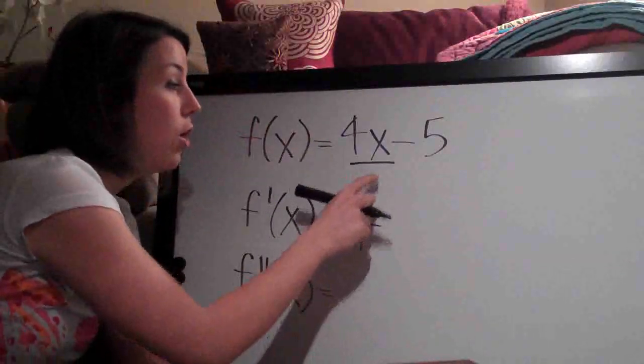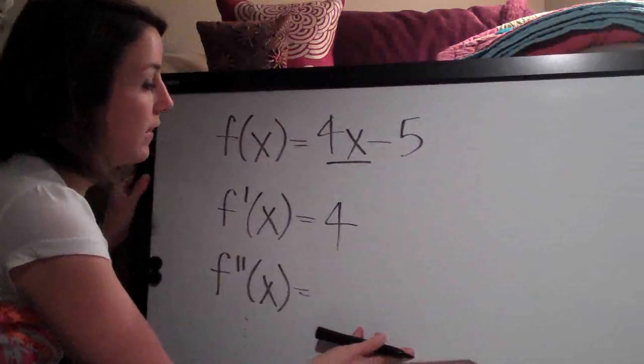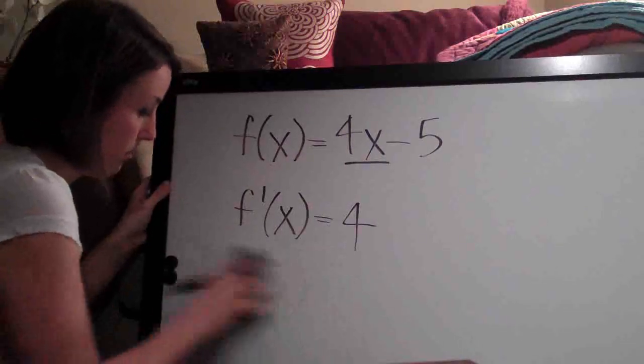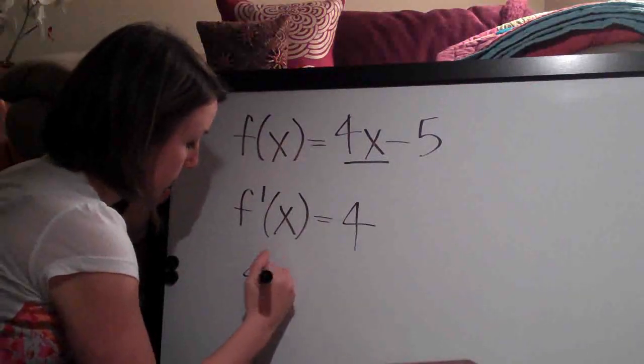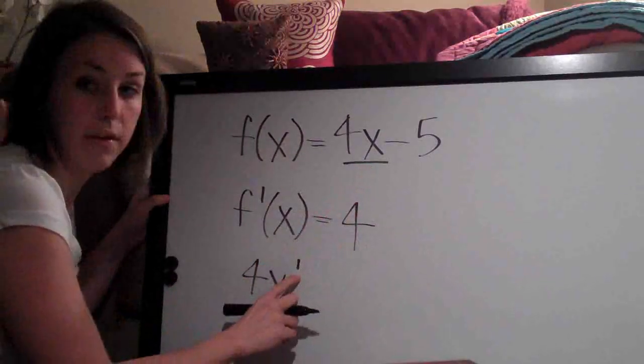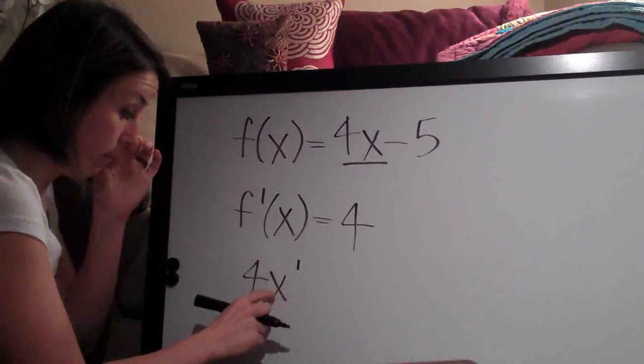The way that you know that the derivative of 4x is simply 4... Let me go ahead and erase this. If you had 4x to the 1. This is actually 4x to the 1. The 1 as the exponent is implied on the x here.